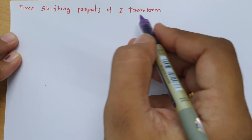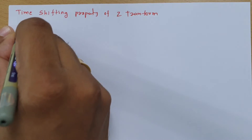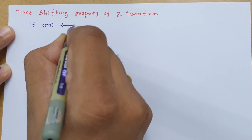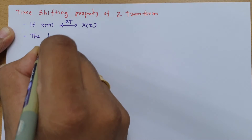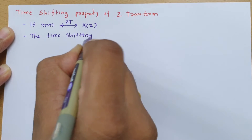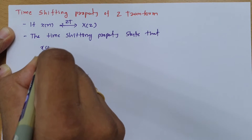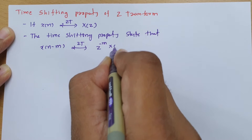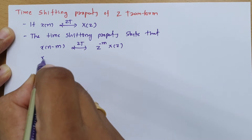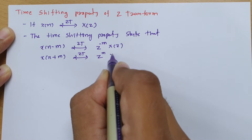Welcome to signal and system lecture series. Here in this session, I will be going to explain the time shifting property of z-transform. To explain time shifting property, if I consider signal x of n, and its z-transform x of z, then the time shifting property states that x of n minus m has z-transform z to the power minus m into x of z. And if you shift this time by plus m, then z-transform has to be z to the power m into x of z.